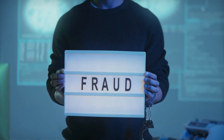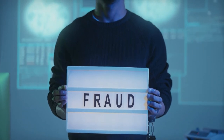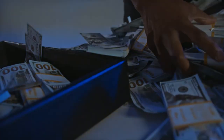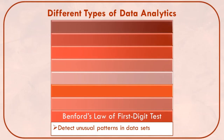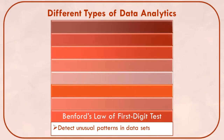Benford's law of the first digit test can be used in fraud investigations to detect unusual patterns in data that may lead to discovering fraudulent transactions and manipulation of accounting records. To summarize Benford's law: the first digit in a set of data that is free of fraud is usually one, two, three, four, or five. However, a transaction is more likely to be fraudulent if a data set starts with six, seven, eight, or nine.